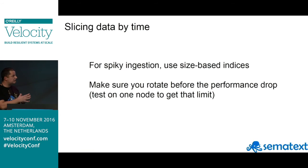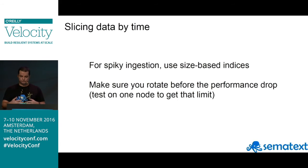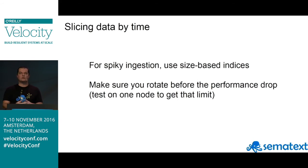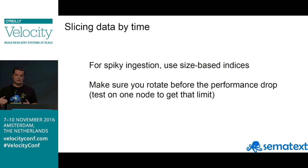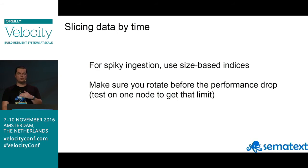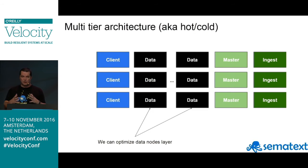To summarize: size-based indices are good for general purposes and they also flatten down the spikes in a log environment. This doesn't really affect metrics — if you monitor CPU usage and don't spin up thousands of containers simultaneously, you won't see a spike in metrics. The key is to rotate before the performance drop happens.